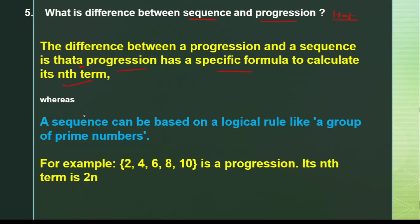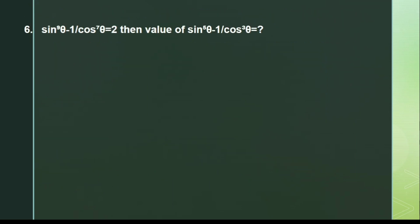Whereas a sequence can be based on a logical rule, like a group of prime numbers. For example, 2, 4, 6, 8, 10 is a progression — its nth term is 2n, so we can easily derive the formula. The next question is from trigonometry and is a tough question.